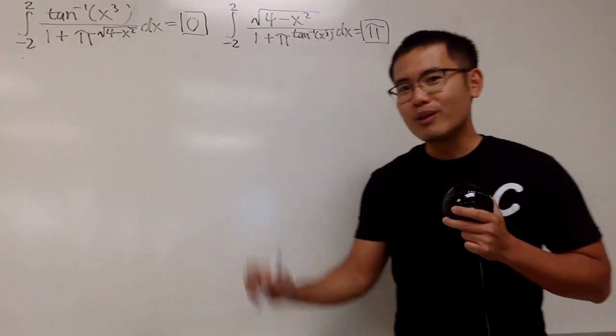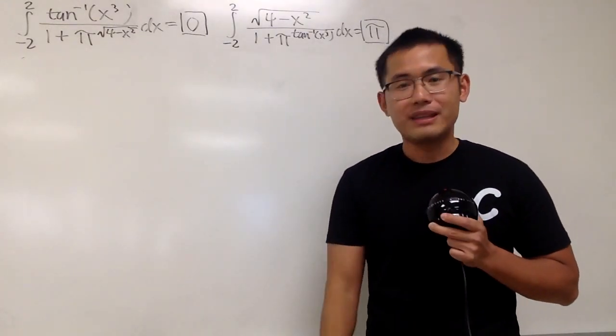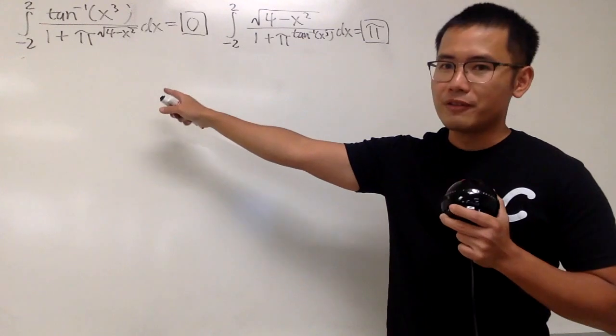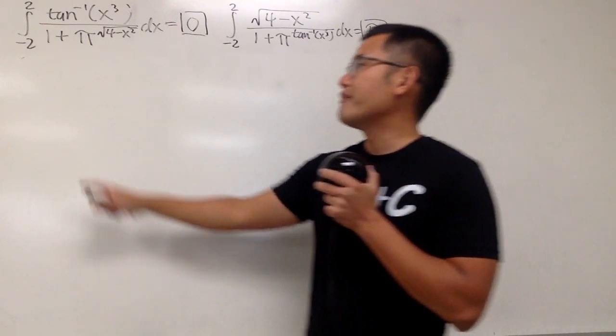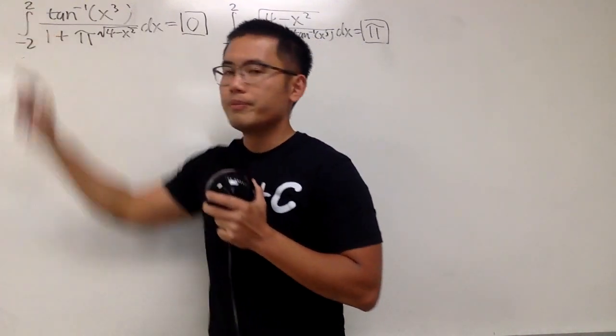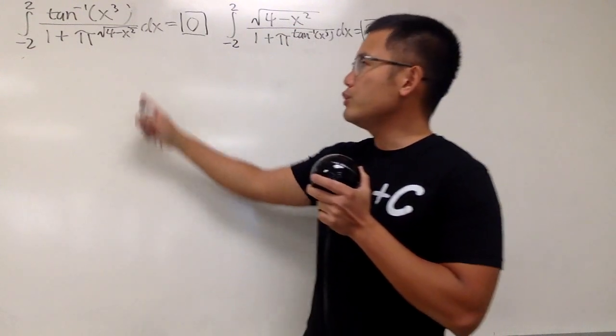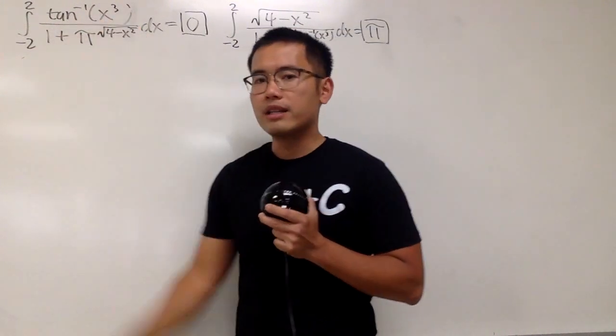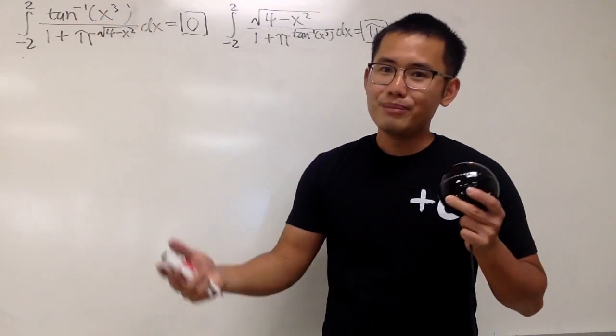Very nice. Although they both look evil, but in fact they are very innocent. And now let's talk about the first one. Notice that we have the integral going from negative 2 to 2. In that case, wouldn't you wish that the integral is an odd function? Yeah, because that would be 0.